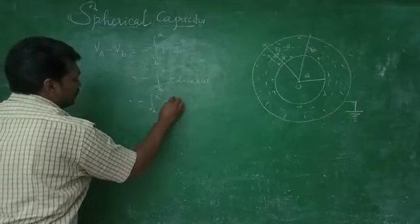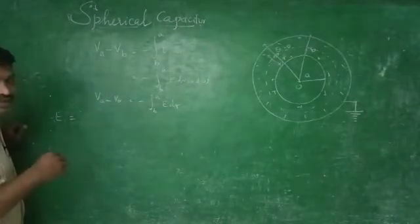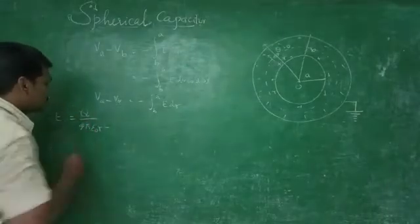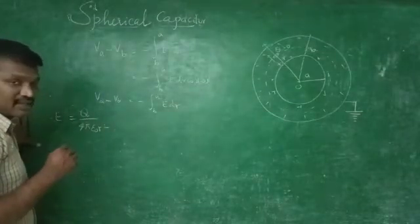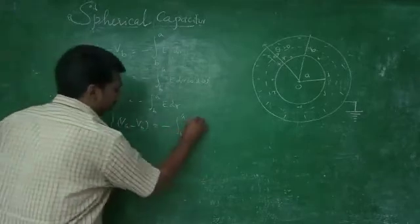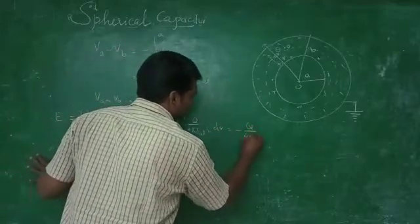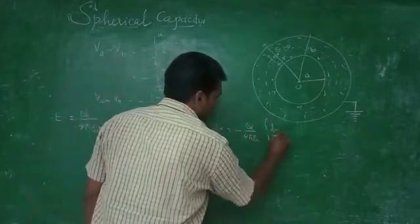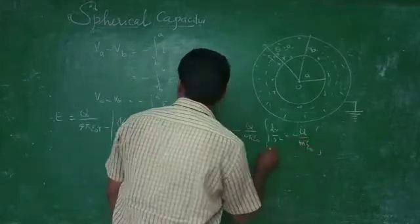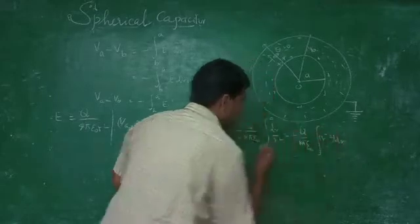So Va minus Vb equals minus integral from B to A of E dr cos theta, which gives minus integral from B to A of E dr. We know that for a spherical charged sphere, E equals q divided by 4 pi epsilon r squared, where q is the charge enclosed. So Va minus Vb equals minus integral from B to A of q over 4 pi epsilon r squared dr, and q over 4 pi epsilon is constant.